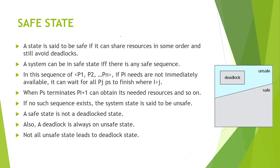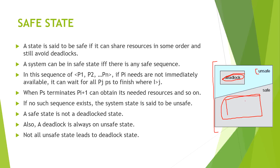Any computer system can be in three states. The first one is safe state, where the system will never go into deadlock. The second state is unsafe state, where the system may or may not go into deadlock. The subset of unsafe state is the deadlock state. So deadlock will never happen in safe state, and we have to make sure that we create a safe sequence of execution of processes so that the system will always remain in safe state.